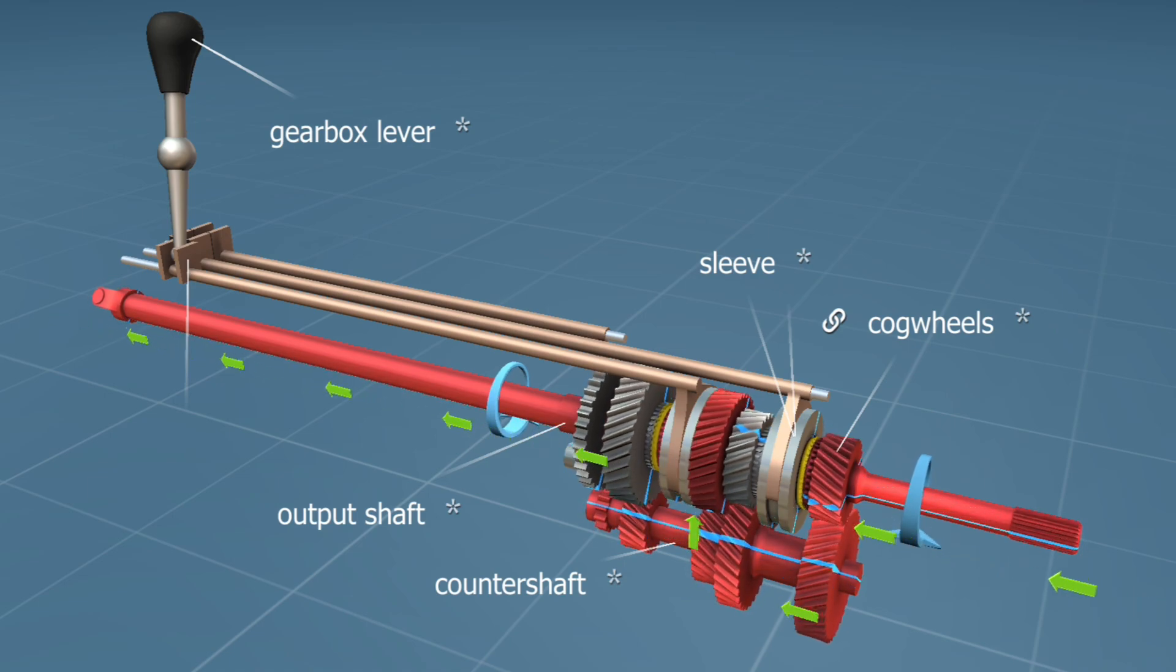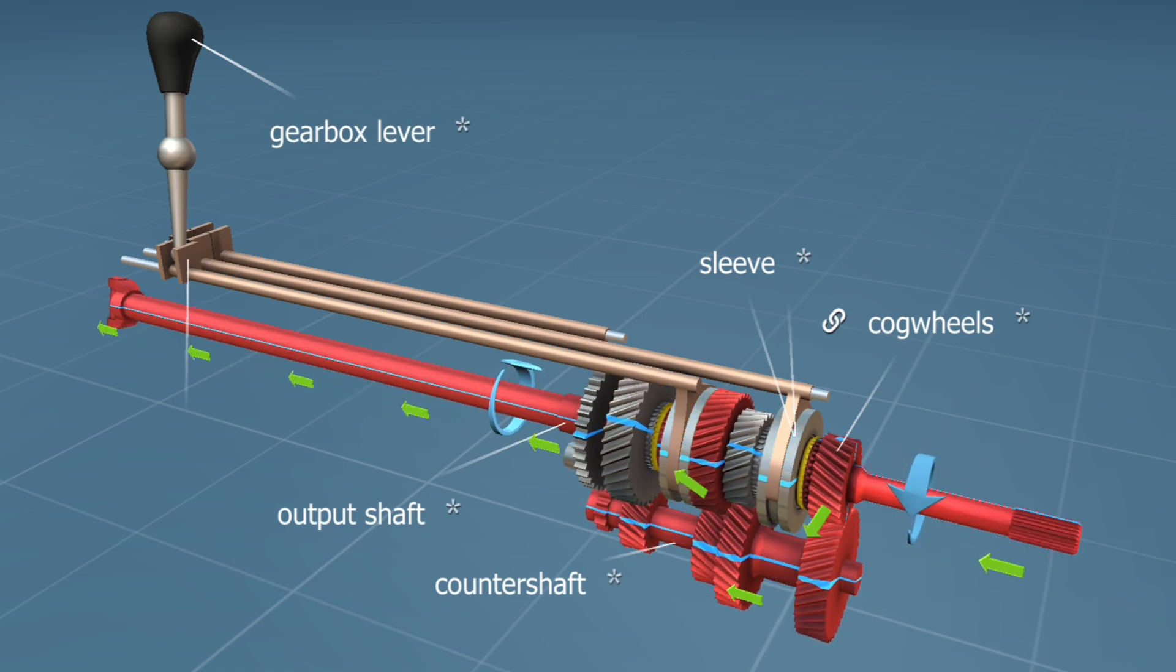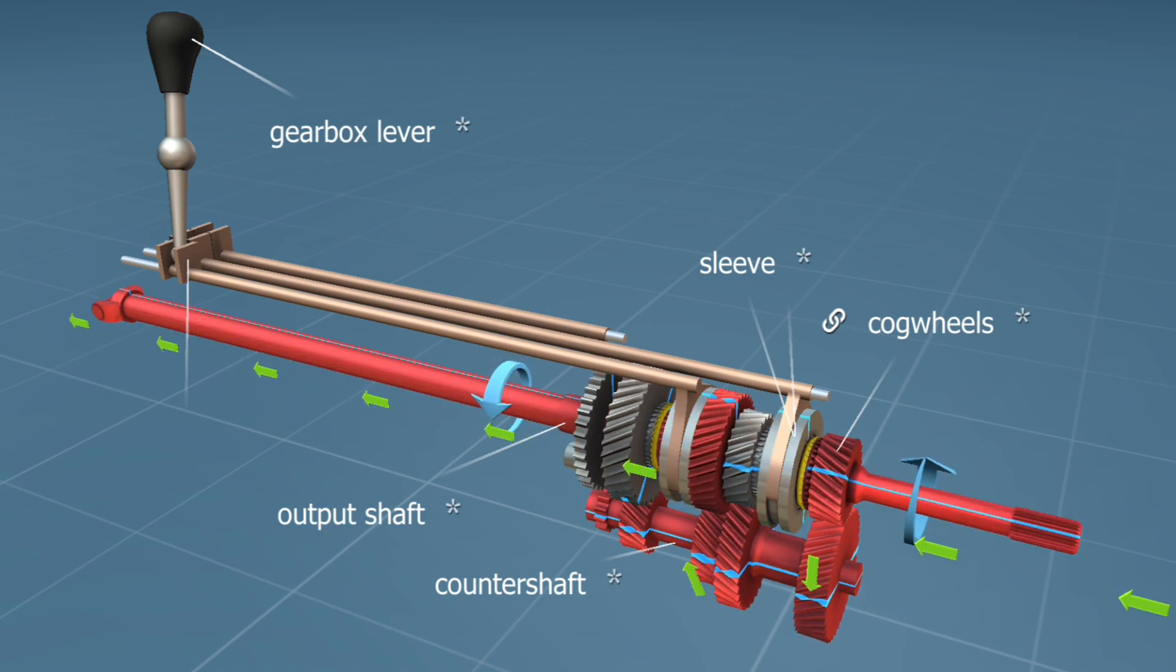In second gear, the sleeve fixes the second gear to the spline shaft, conducting the driving force through it.